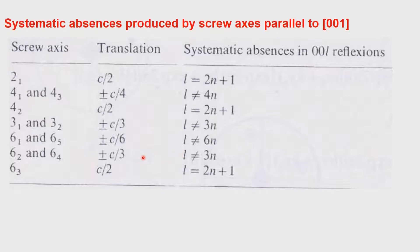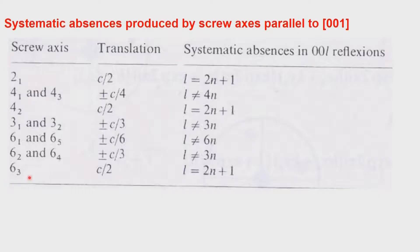What this means is that by looking at the systematic absences associated with these crystal systems, you cannot always decide the space group uniquely. For example, for space groups P3₁ and P3₂, just looking at the systematic absences you cannot say whether it is 3₁ or 3₂. The same is true with 6₁ and 6₅, with 6₂ and 6₄, and with 4₁ and 4₃. Only when you have half the translation of the length — for example 6₃ or 4₂ — do you get a unique result, since those reduce effectively to 2₁ and give l = 2n+1 absent.